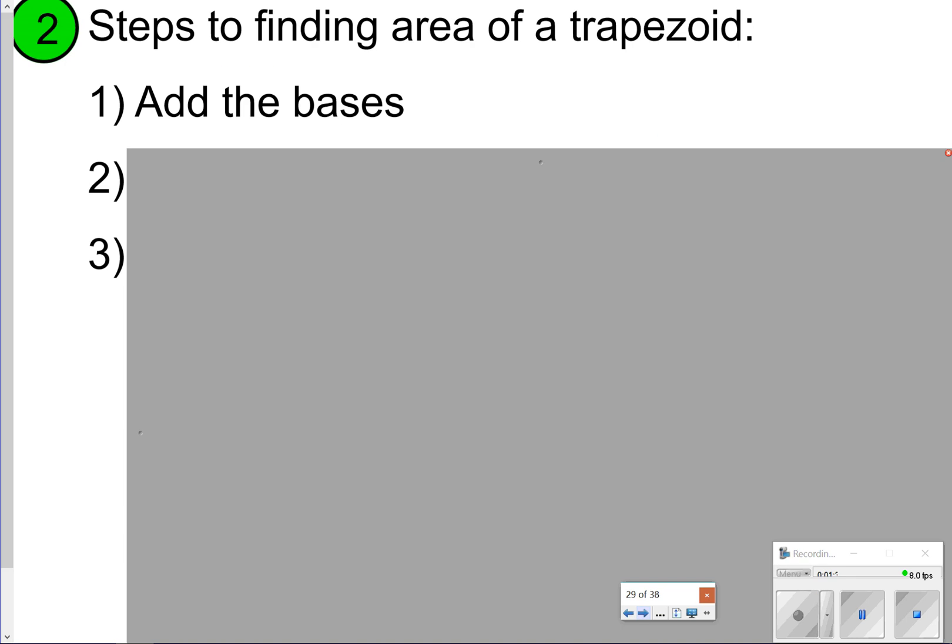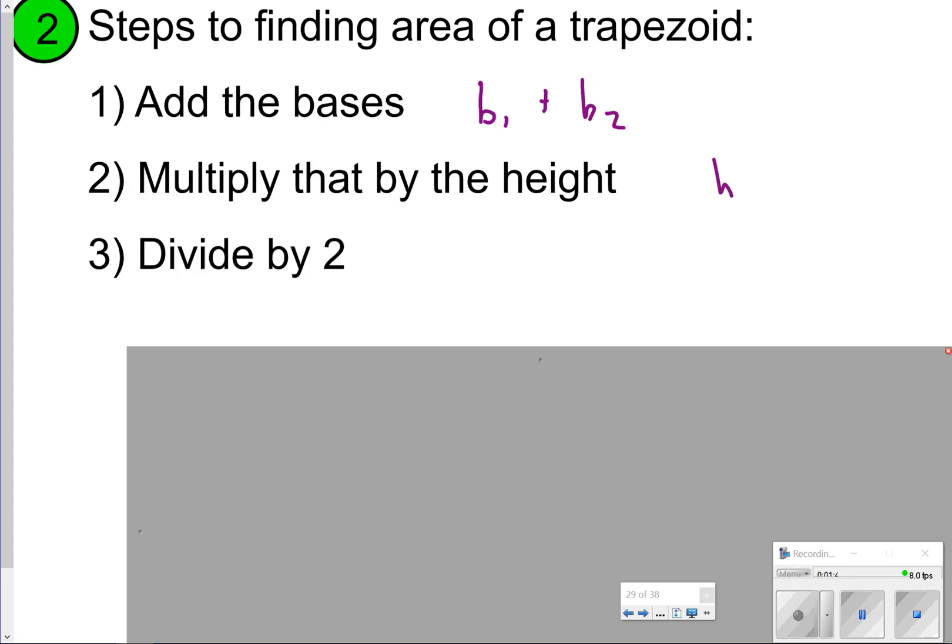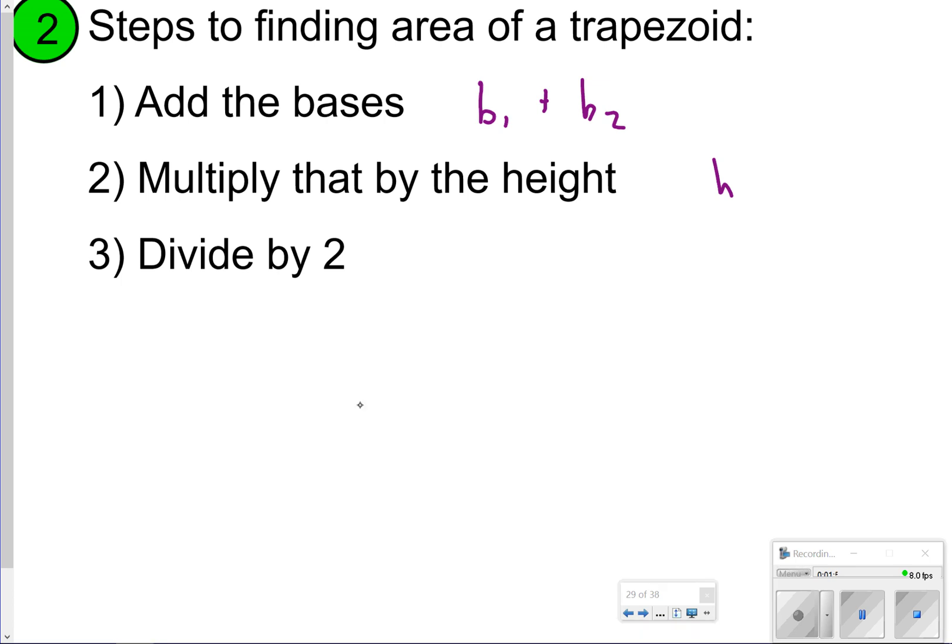The next thing we're going to talk about is how to find the area of a trapezoid. These are just some simple steps. The first thing you're going to do is add the bases—remember that's B1 and B2—and then you're going to multiply that by the height, and then you'll divide it by two. So very simple: add the bases, multiply by the height, and divide everything by two. Let's go ahead and take the time now to pause the video, and once you're done, click play so we can go on and try some questions.